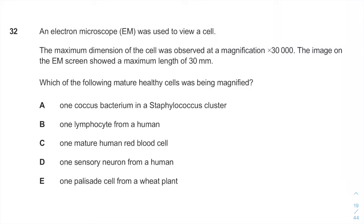So, coccus bacterium is usually 0.5 to 1 micrometer. And if you just multiply it by 30,000, you get 30 millimeters.